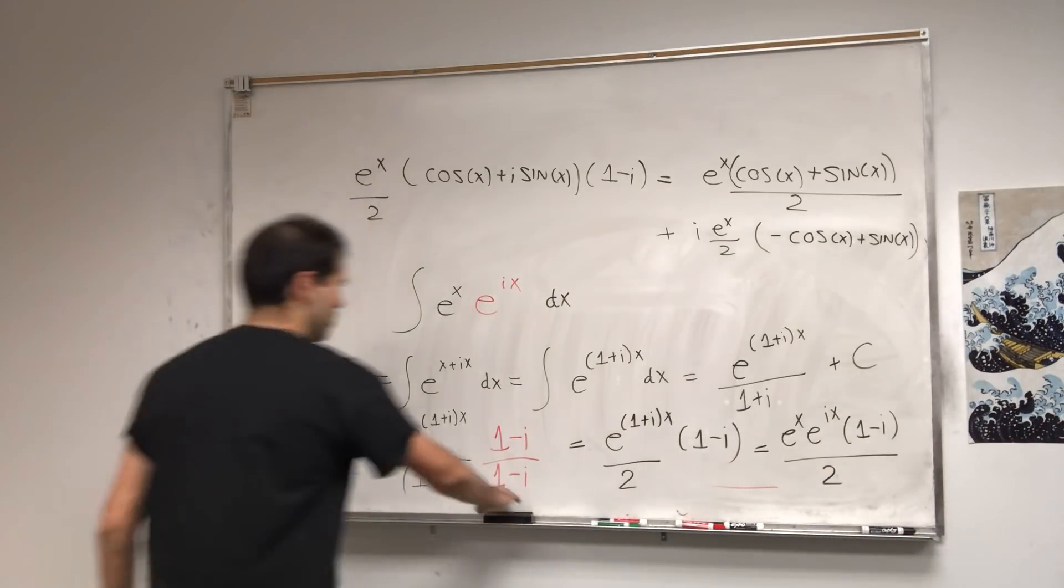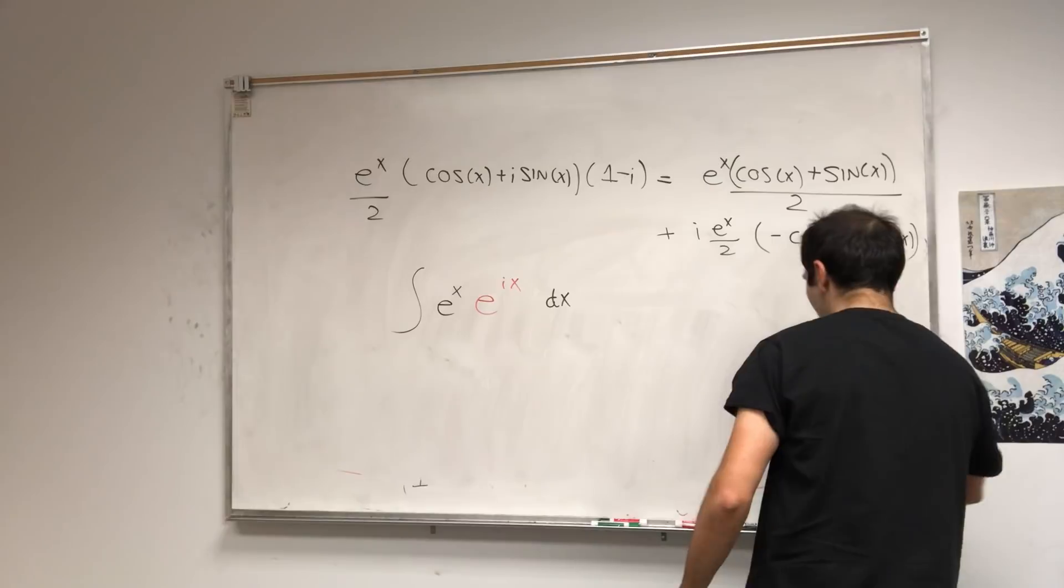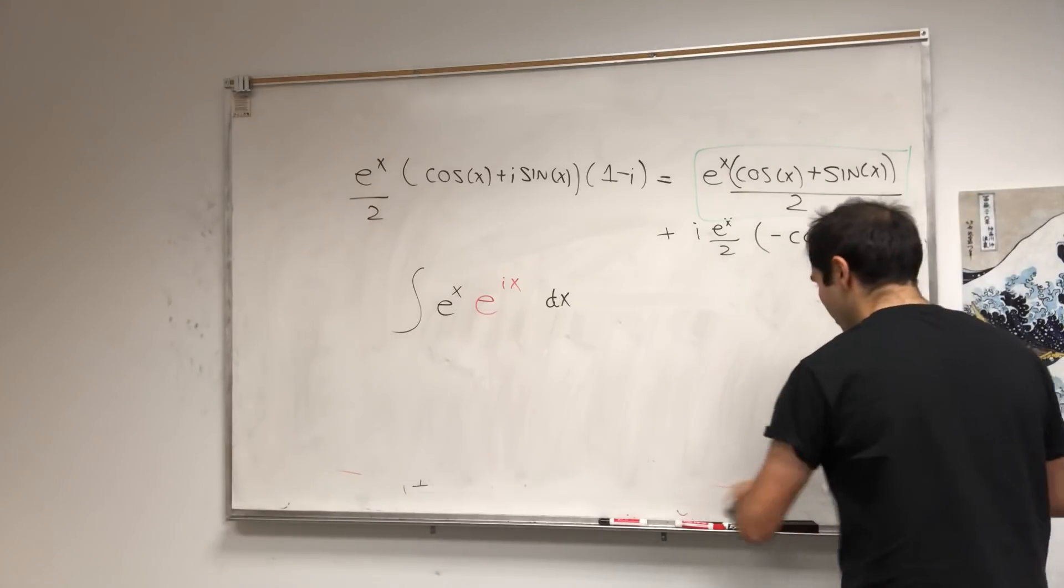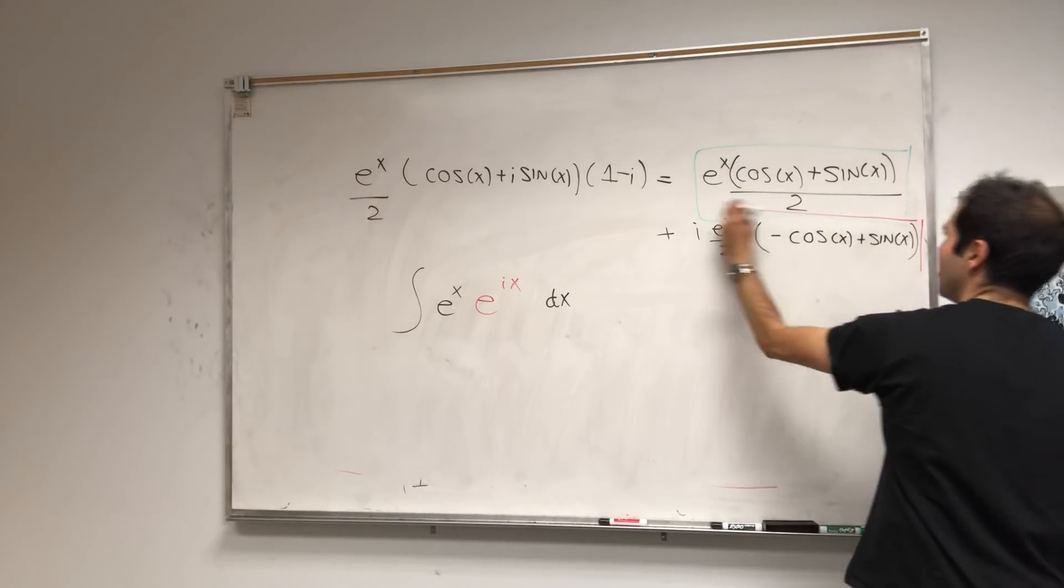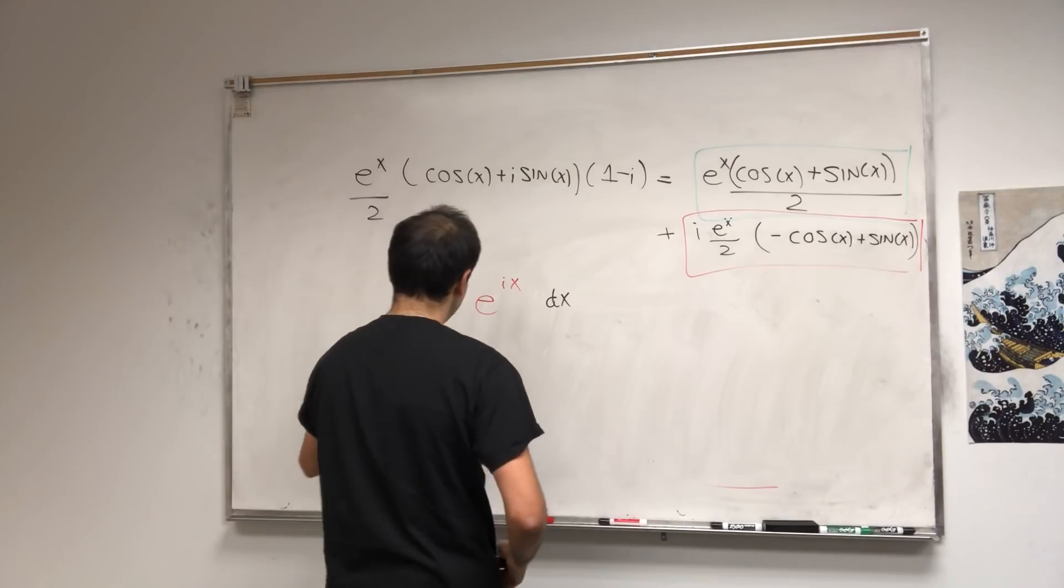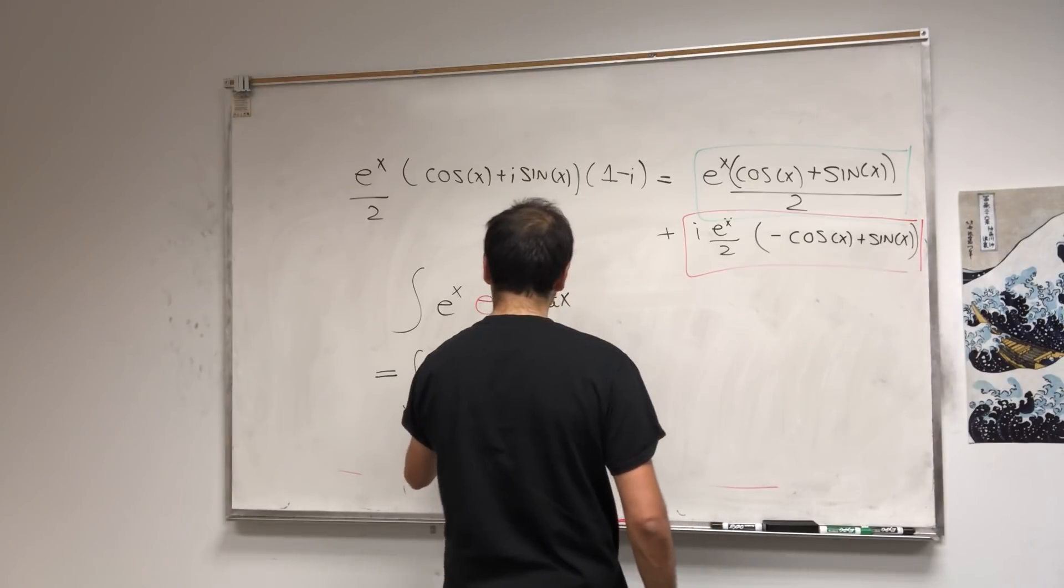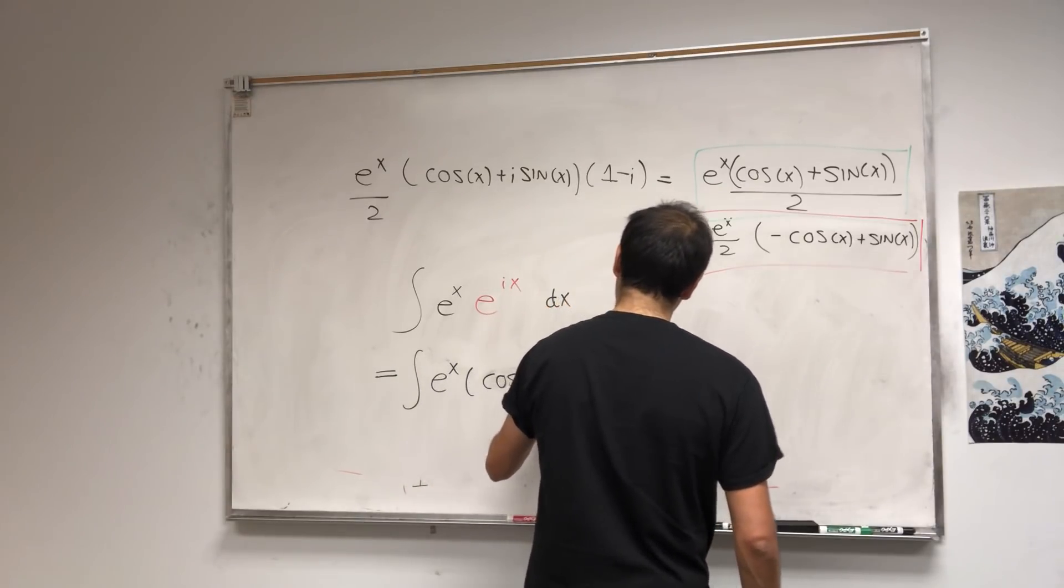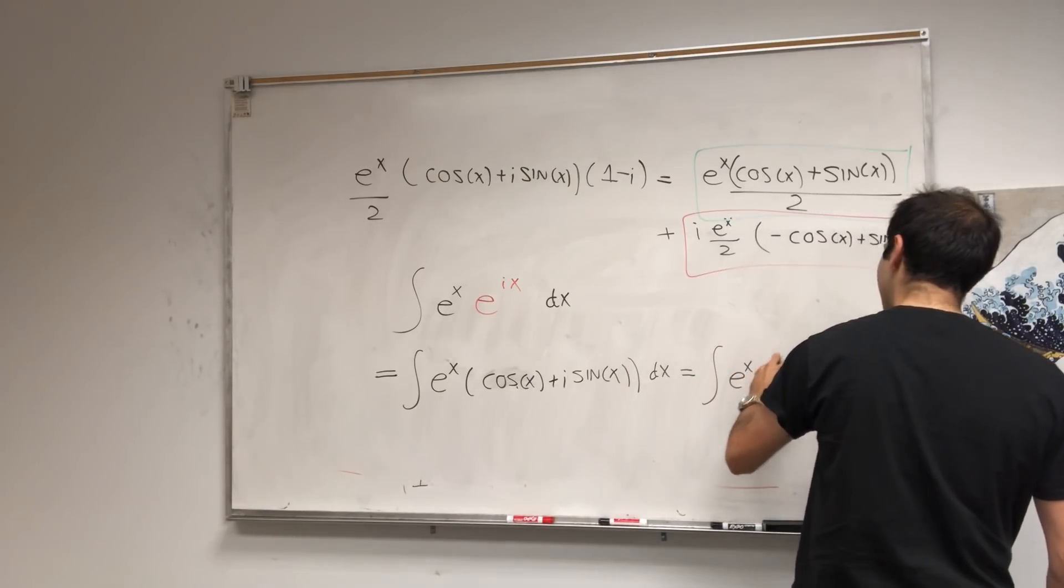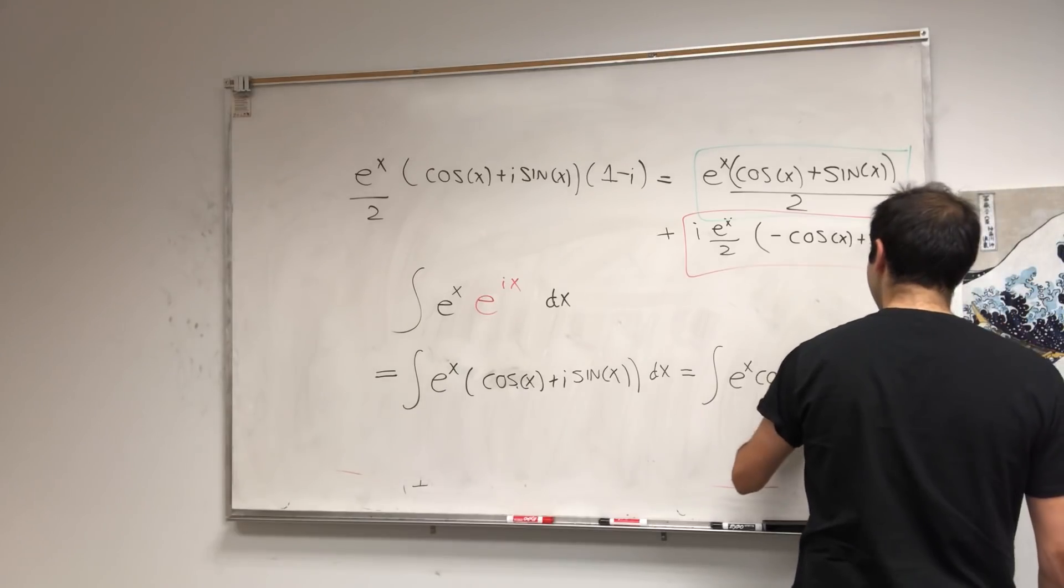Now, why is this important? We evaluated that integral using complex numbers. We wrote this in terms of real parts and imaginary parts. So integral of e^x (cos(x) + i sin(x)). And that's integral of e^x cos(x) plus i integral e^x sin(x) dx.